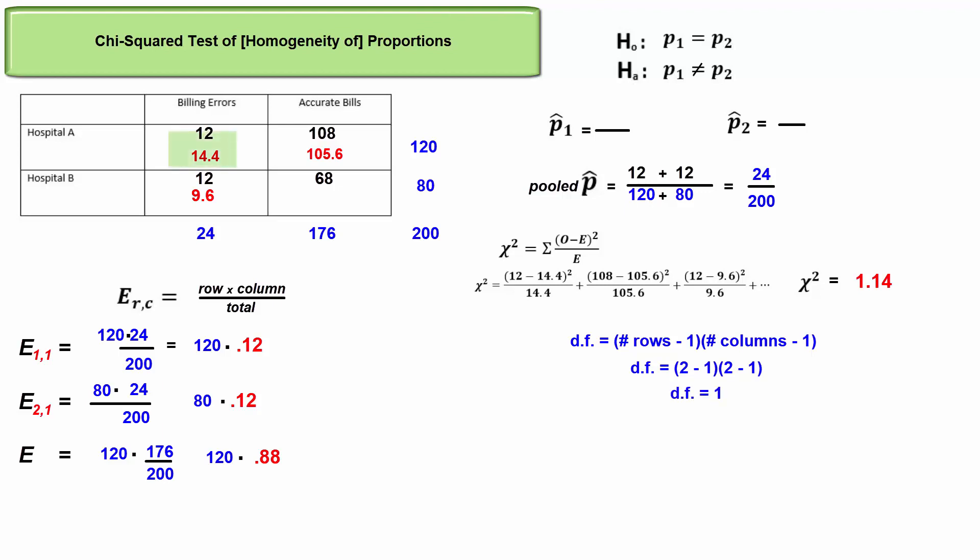And we can see this if 14.4 is expected in the upper left cell, there's no more freedom for any other expected count. All the other cells must be the precise amounts that make the rows and columns add up to the proper totals. 14.4 plus 9.6 adds to the 24 successes, and 105.6 expected failures are necessary to account for hospital A's sample size of 120.